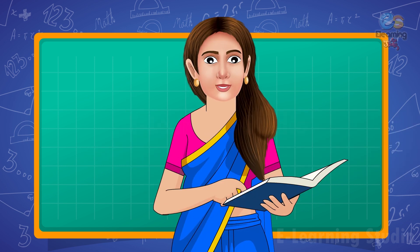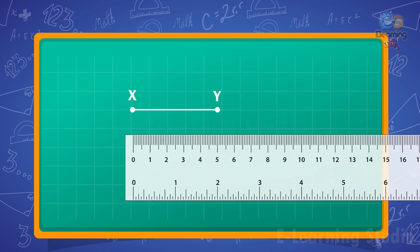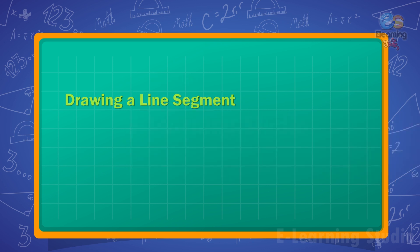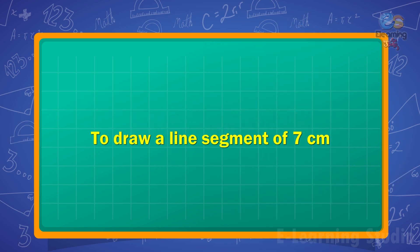Let's take another example. To measure the length of line segment XY, we place the edge of the ruler along line XY with the zero mark on one end X, and read the ruler mark where the line ends at Y. If the line ends at the 5 mark on the ruler, then the length of line XY is 5 centimeters.